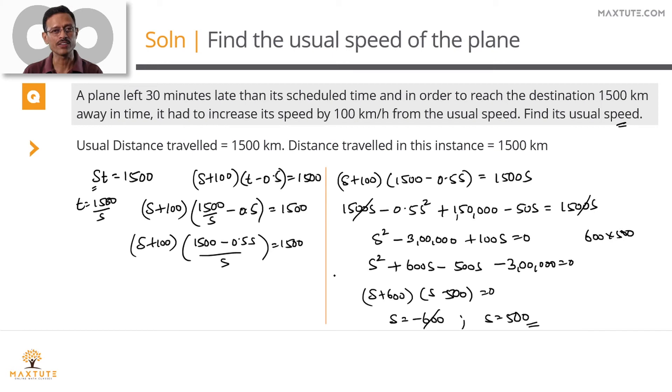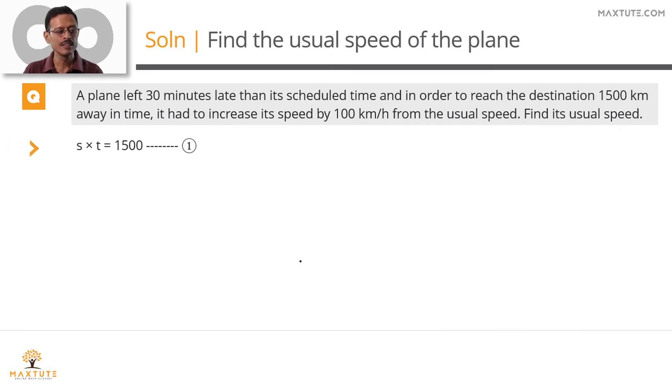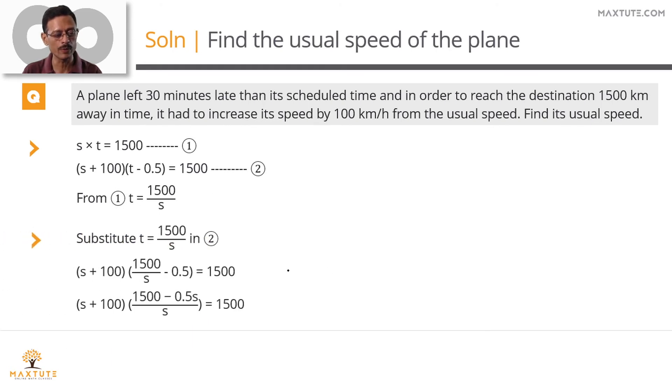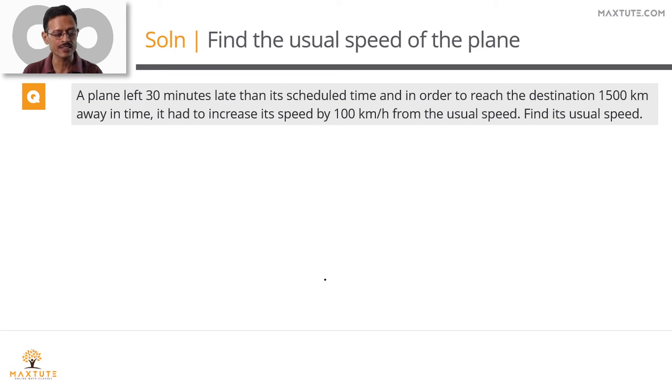Let's quickly run through this entire calculation of framing the equation and factorizing it in a printed form. The usual speed is s. Usual time is t. The distance covered 1500 can be written as s into t equals 1500. In this instance, the speed is s plus 100. Time is equal to t minus 0.5. The product of these two, speed into time will also be equal to 1500. We'll replace this t with 1500 by s from equation 1 into equation 2. So this is what it basically pans out to. Cross multiply this s to get this expression. When you cross multiply it, this is what you're going to get. Expand the left hand side term.